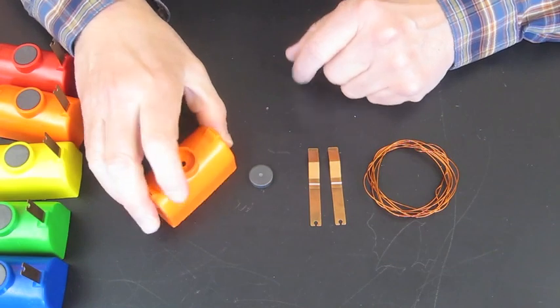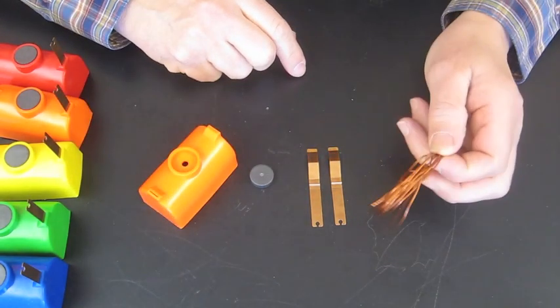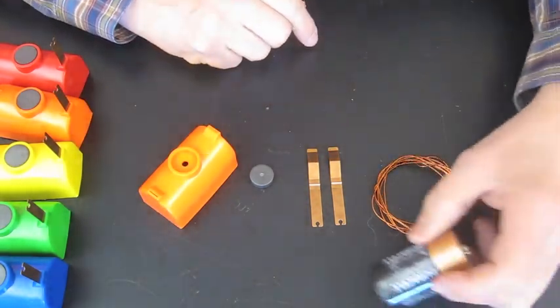The kit comes with the base, the magnet, two supports and wire to make the coil. The only thing you need to add is a battery to power it.